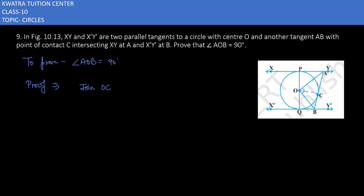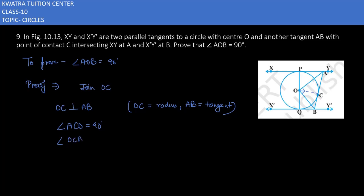Now, OC is perpendicular to AB. Why? Because OC is a radius of the circle and AB is a tangent. We know that a radius to a point of tangency is perpendicular to the tangent. So angle ACO will be 90 degrees and angle OCB will also be 90 degrees.